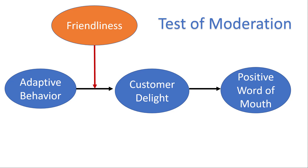When talking about testing moderation, the key idea is forming interaction terms to test if the moderator is strengthening or weakening your relationship. To give an example, I've got a simple model from a restaurant setting where adaptive behavior — did the employee adapt their behavior to you — led to customer delight, and then did that delight lead to positive word of mouth. The hypothesis was that friendliness of the server would strengthen the relationship from adaptive behavior to customer delight. If the server wasn't friendly, it would weaken that outcome, but if they were very friendly it would strengthen it.